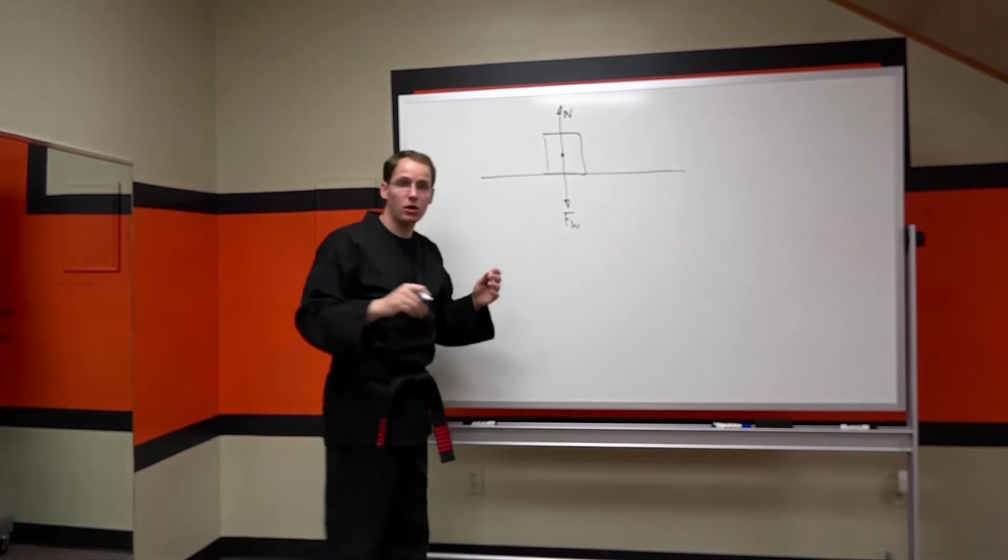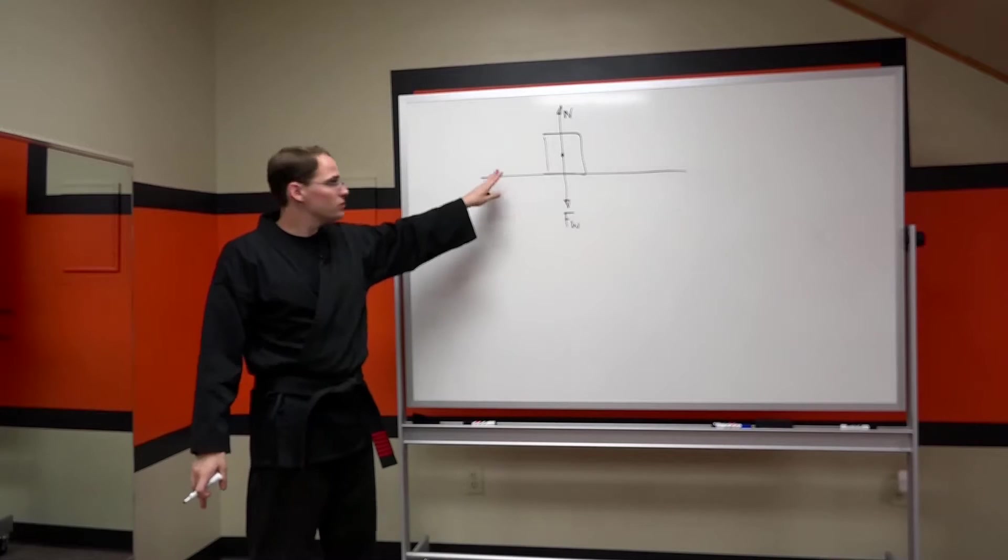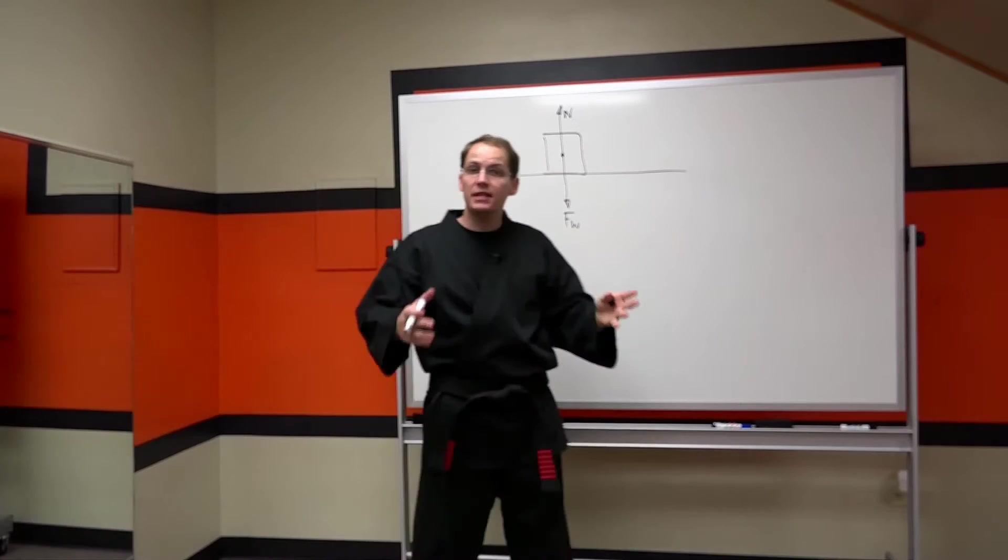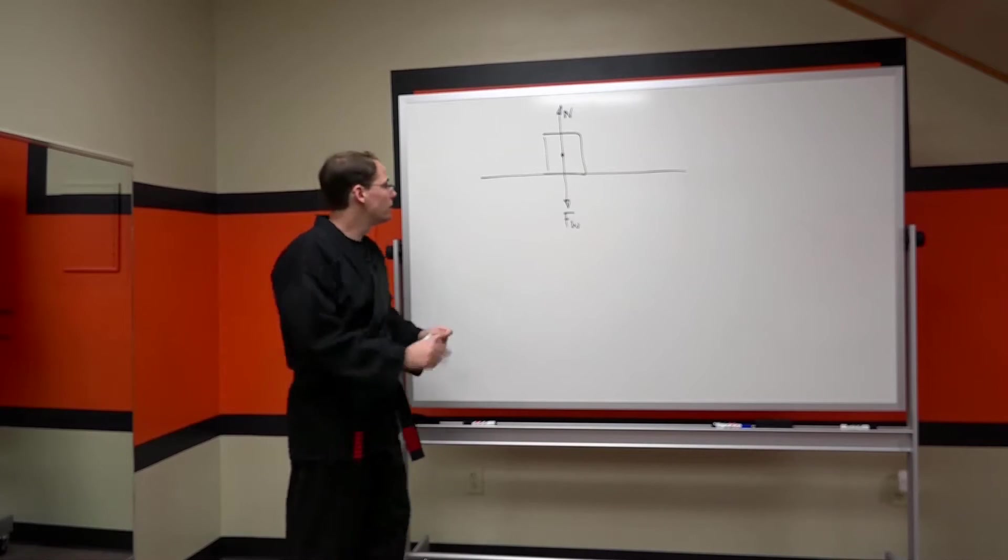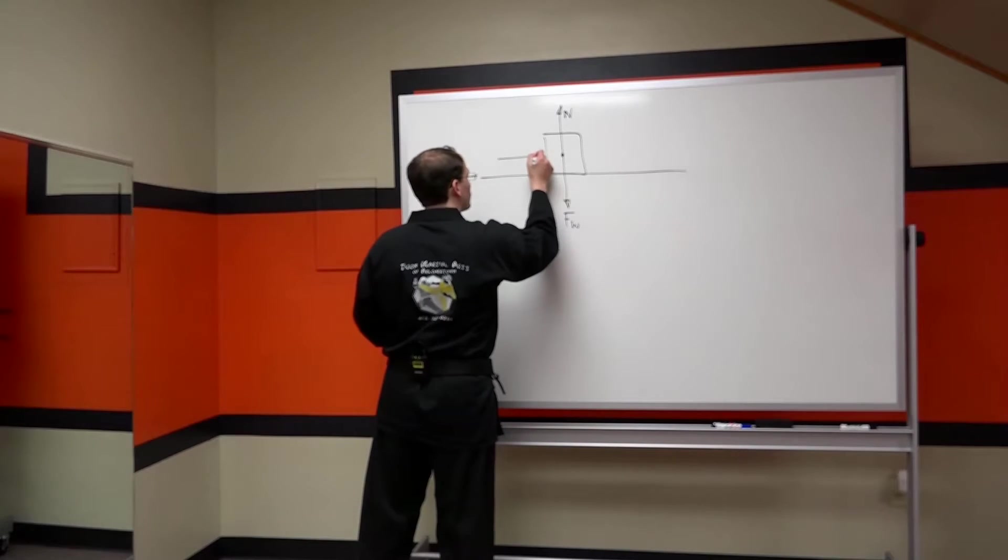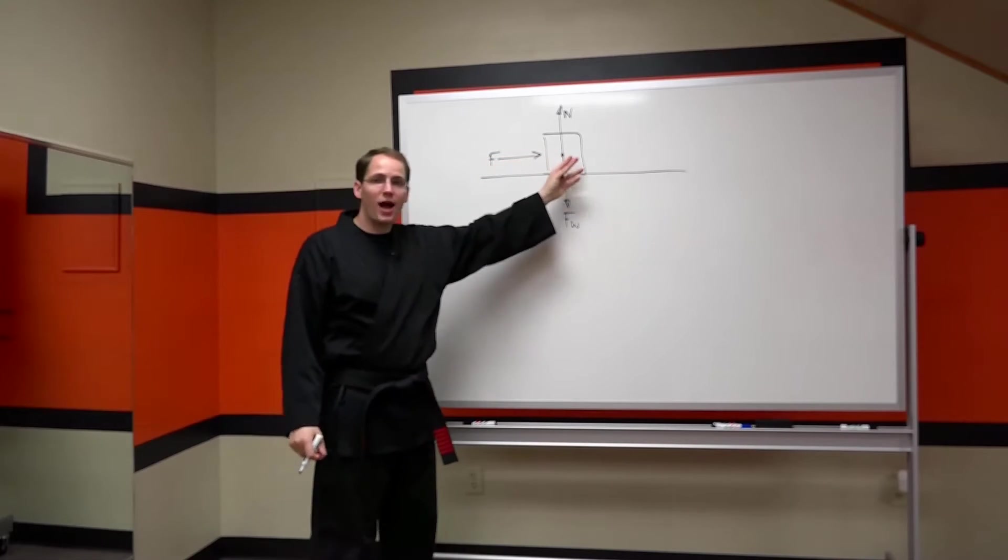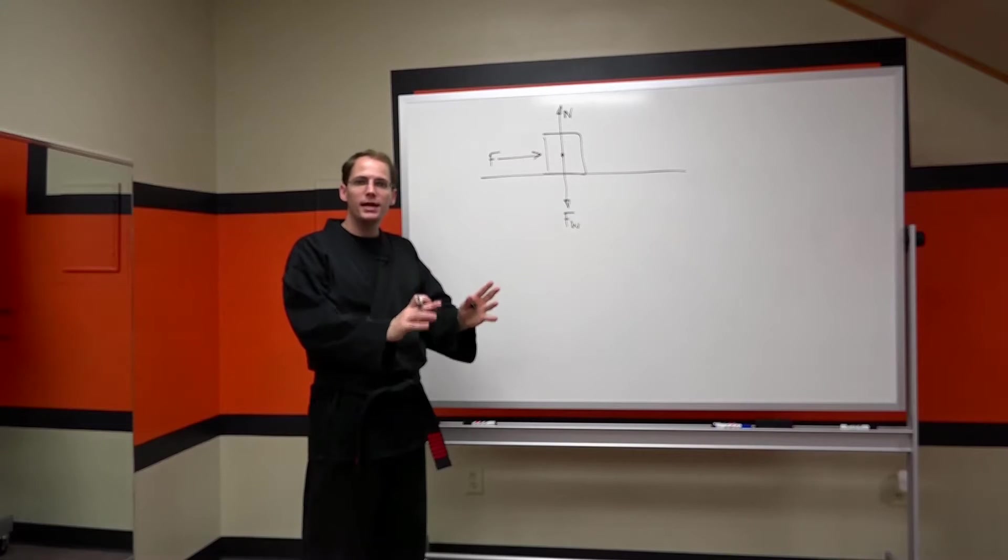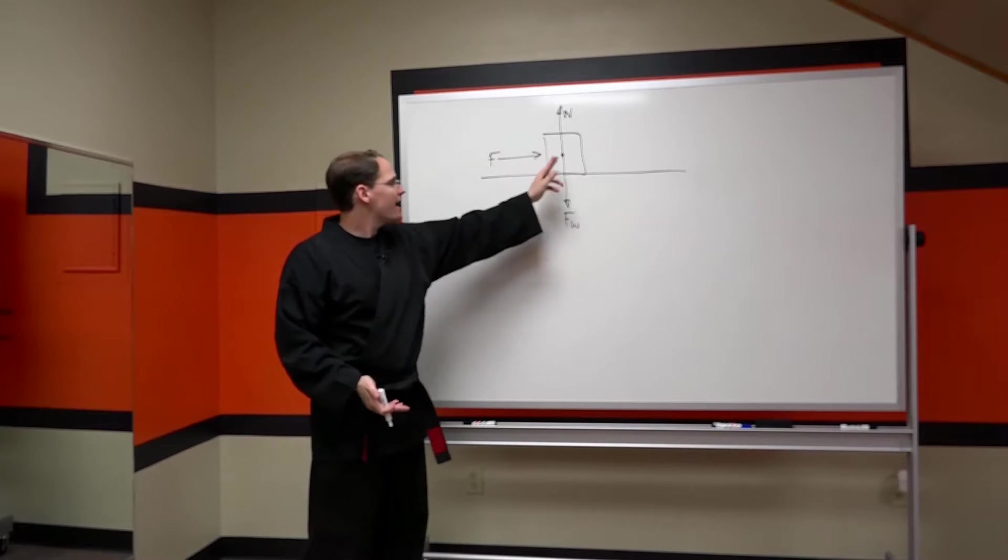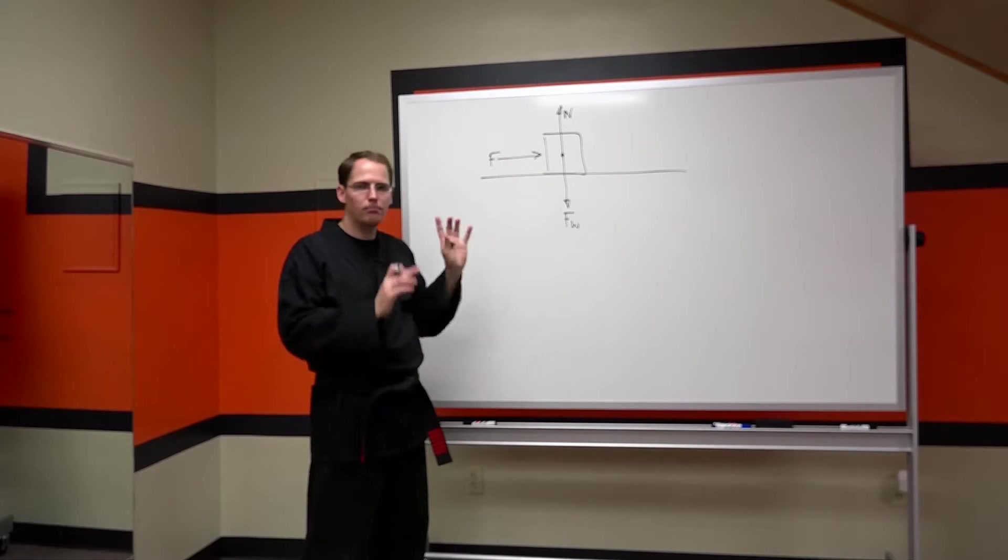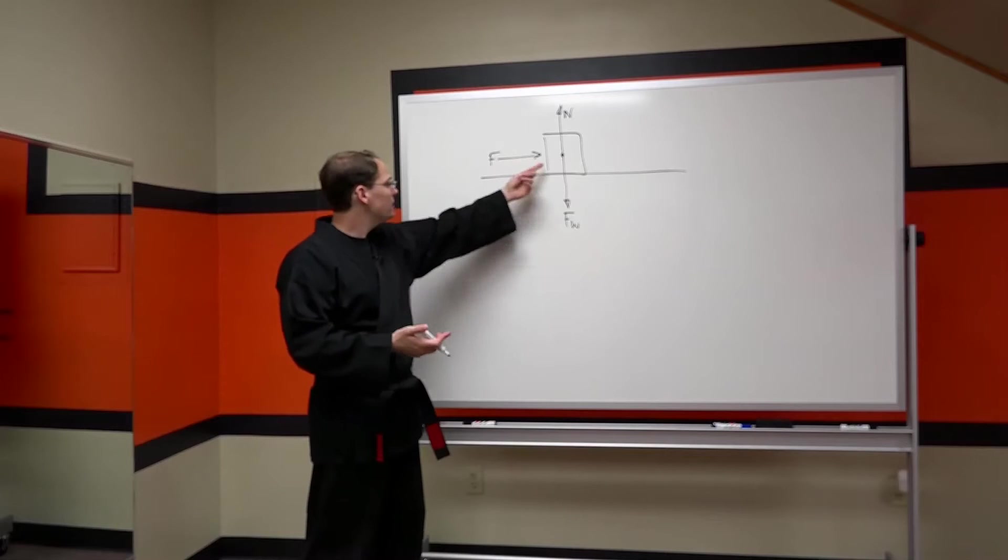But now to fully understand what's going on here, we have to take this example a step further. Now I want you to imagine I see this box, and for whatever reason I decide I want to move the box. So I come along and I apply a horizontal force to this box. But to my surprise it doesn't move, it's more massive than I thought it was. So of course there has to be another force involved here that cancels out my applied force. Well what is it?